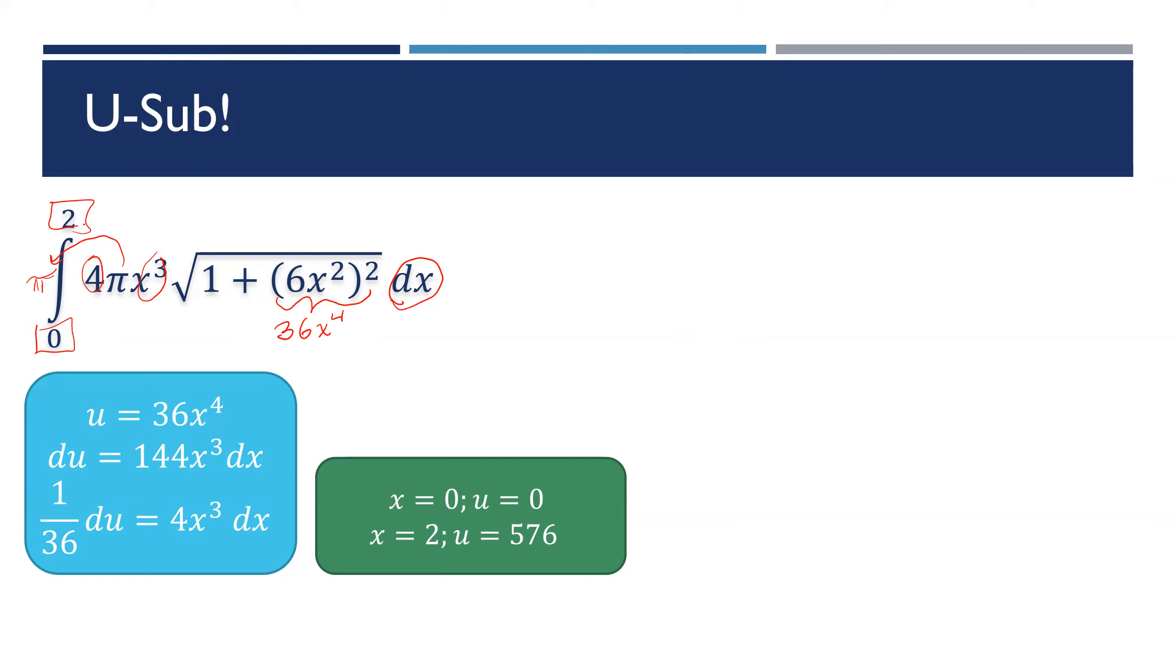This integral from 0 to 2 with respect to x is going to be an integral from 0 to 576 with respect to u. This will become √(1 + u). The 4x³ dx is 1/36 du, so I can factor that out.